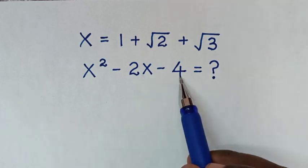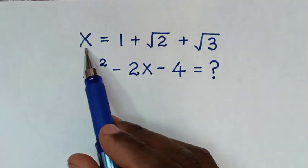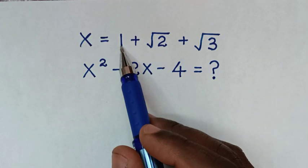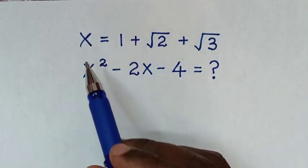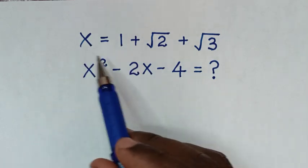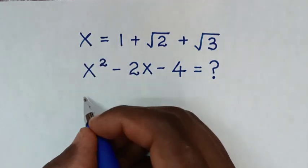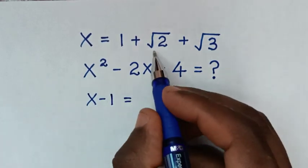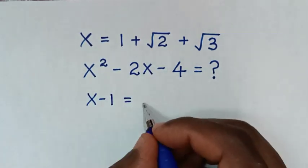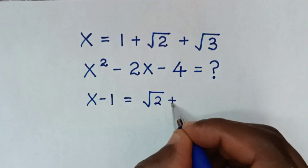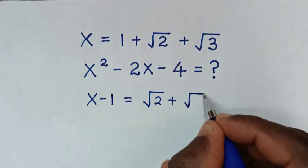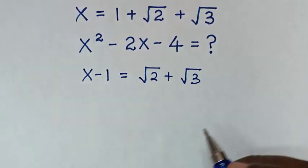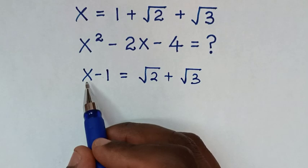From the given equation, we take 1 to the left side, so we get x - 1 = √2 + √3.